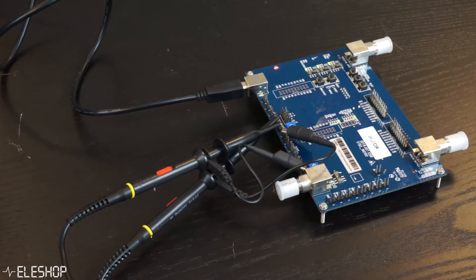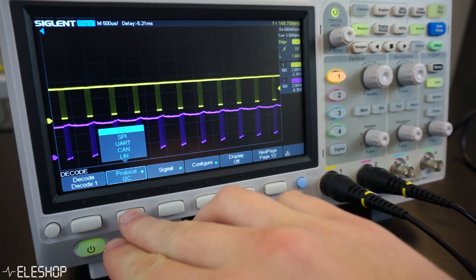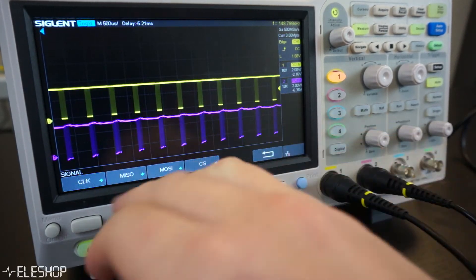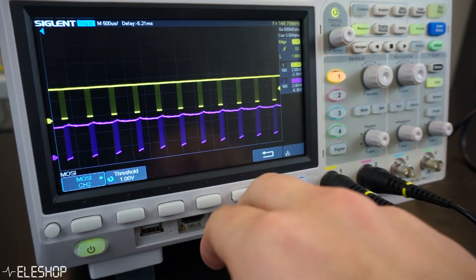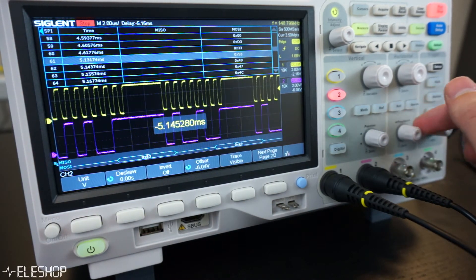First I will decode a signal with an SPI decoder. We have one probe connected with the serial clock and another probe is connected to a pin for the receiving data. When we use the decoding feature of the oscilloscope and set the correct settings for SPI, we can see the decoded signal.